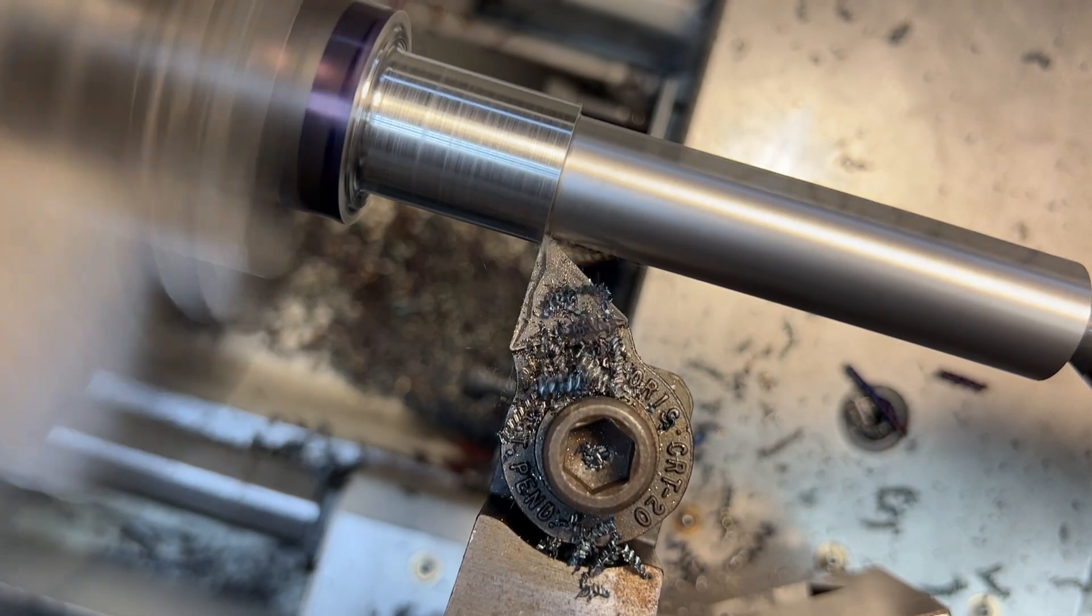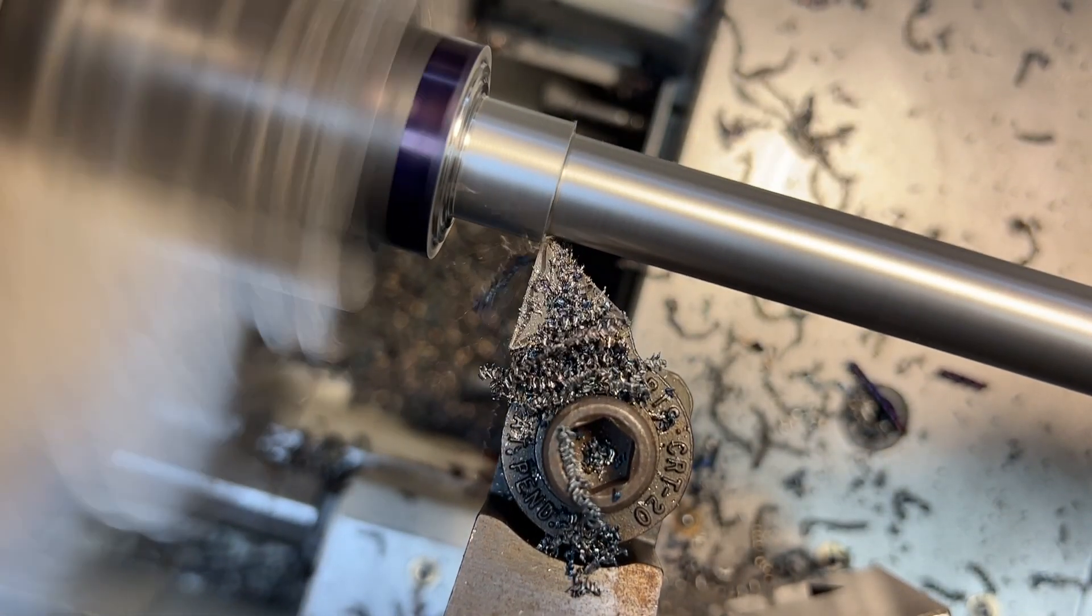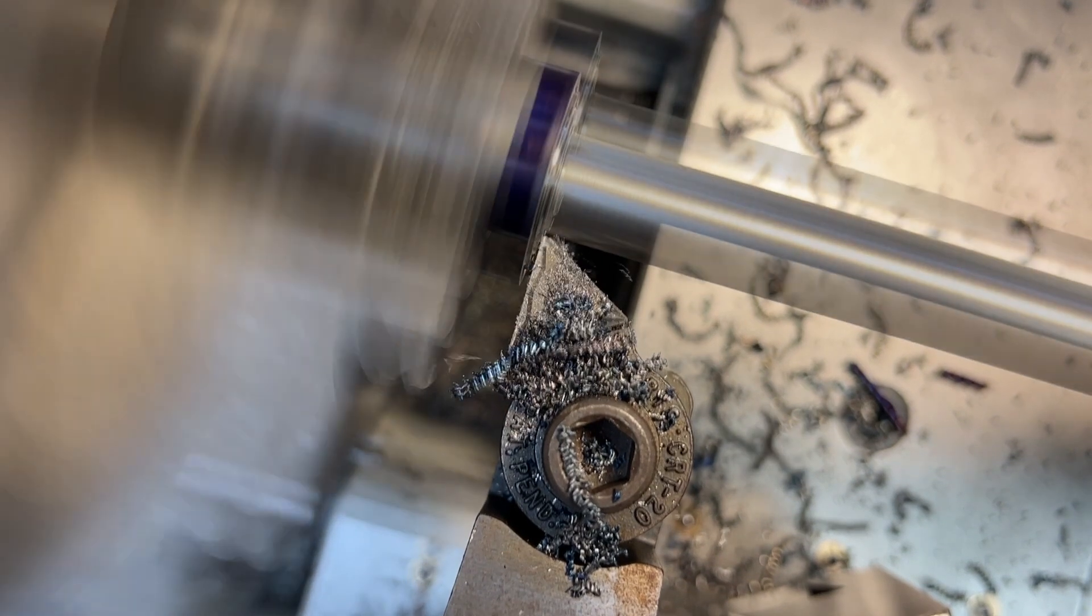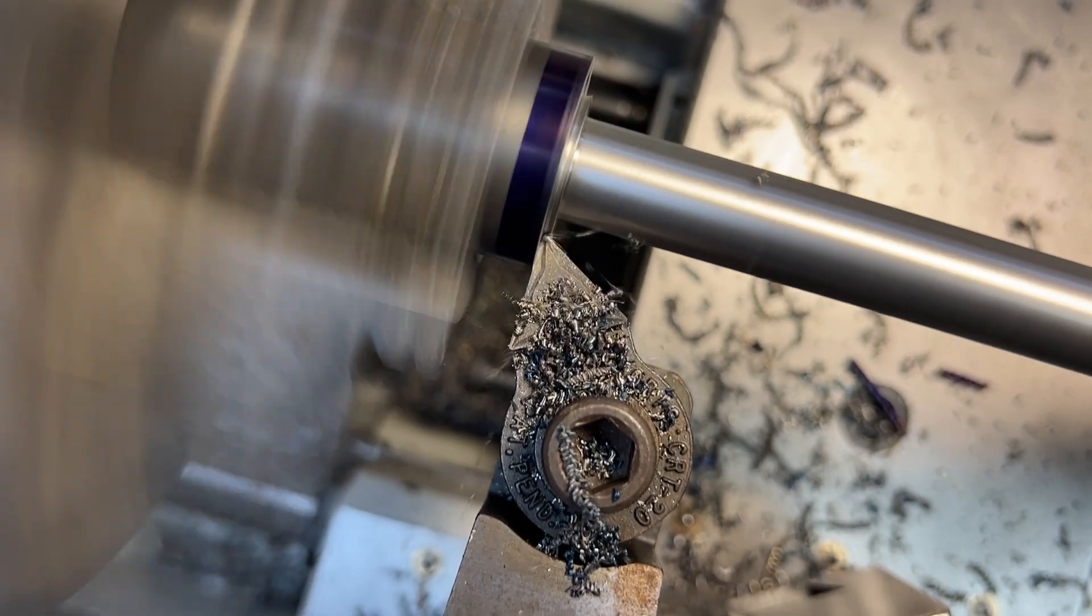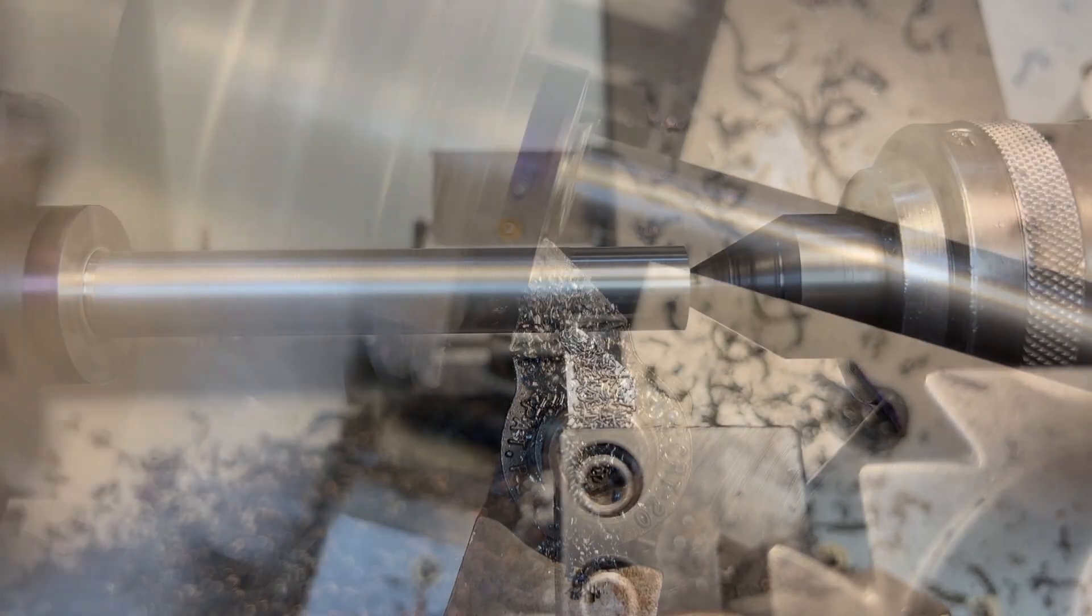Because of that, we have a pretty close tolerance on that little section there. So we are actually going to switch to high-speed steel as we get a little bit closer to that final diameter.